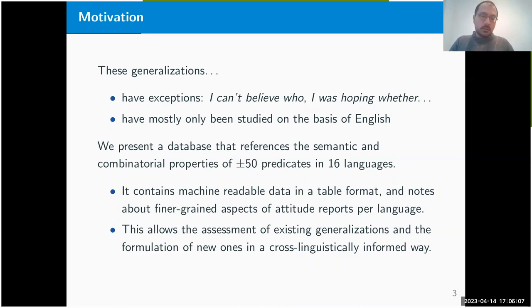English data. In order to address these kinds of questions or issues, we constructed and present a database that references the semantic and combinatorial properties of approximately 50 predicates in 16 languages.